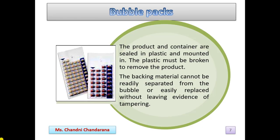The next is the bubble packs. The product can be made in several ways, but usually it is formed by sandwiching the product between a thermoformable or heat-shrinkable plastic film and a rigid backing material, then passing it through a heated tunnel. The product and container are sealed in plastic. The plastic must be broken to remove the product, and the backing material cannot be readily separated from the bubble or easily replaced without leaving evidence of tampering.